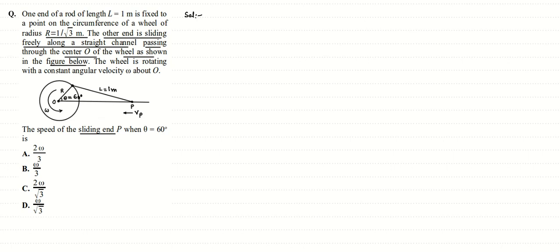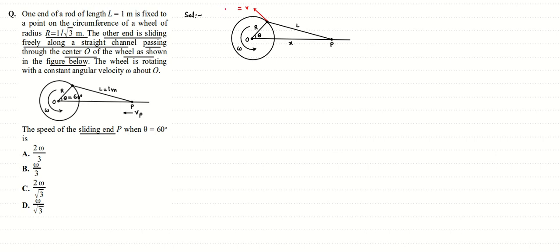To solve this, let's redraw the diagram. The velocity of the particle at point A is along the tangent, and this velocity equals R·ω = (1/√3)·ω = ω/√3 in magnitude. With θ = 60°, we mark point A on the wheel and drop a perpendicular onto line OP, calling that foot point B.